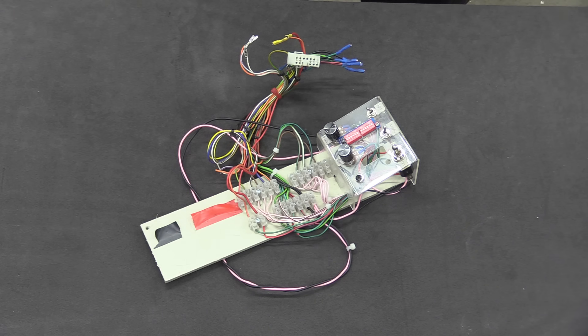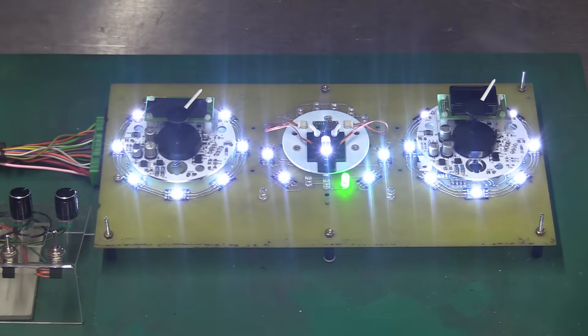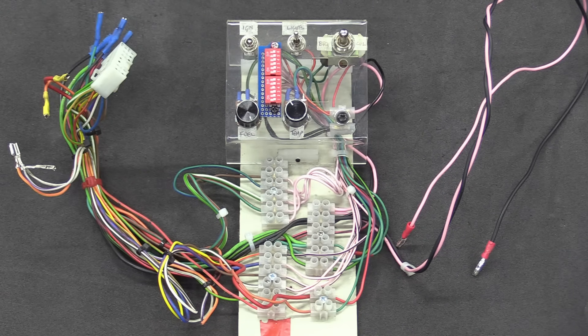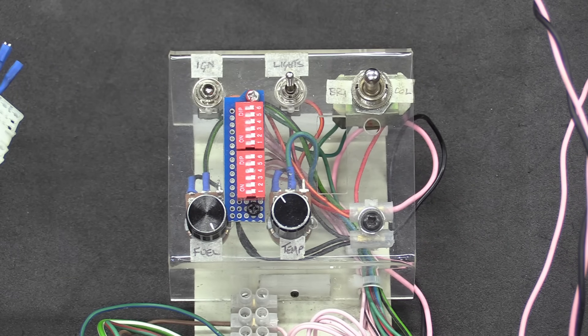For our bench testing, we made a stand-in control box that mimics the inputs from the car. For example, there's a switch that represents the lights being turned on. There's a momentary toggle switch to scroll through the brightness levels. And there's potentiometers standing in for the fuel level and water temperature senders.